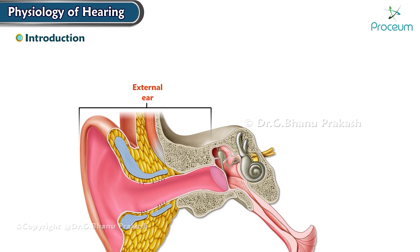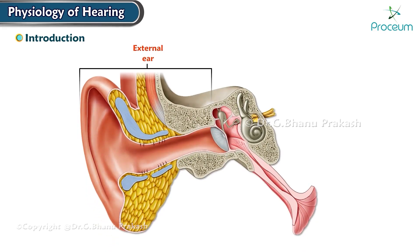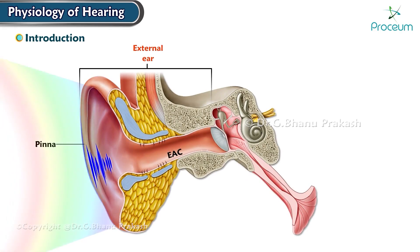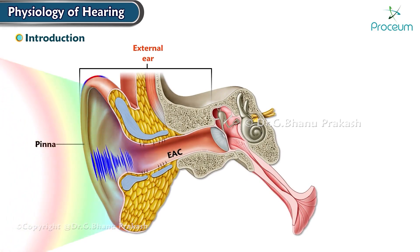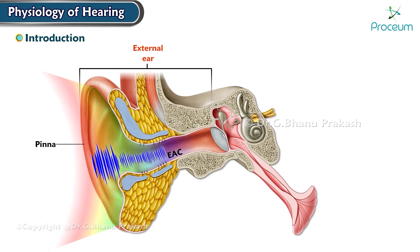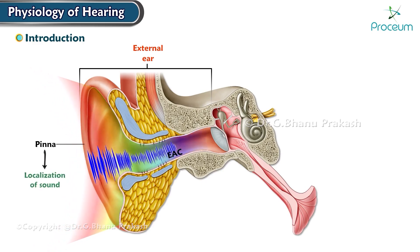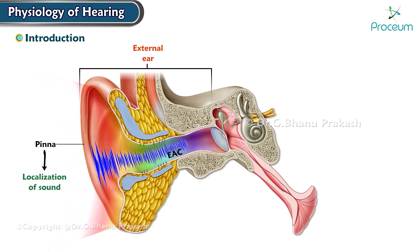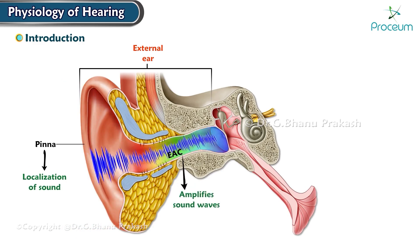The outer ear consists of the pinna and the external auditory canal. Sound waves are collected by the pinna and directed into the external auditory canal. The pinna helps in localization of sound, while the external auditory canal amplifies the sound waves.